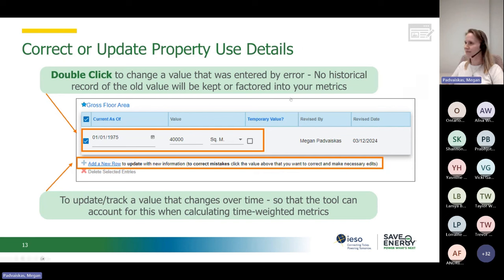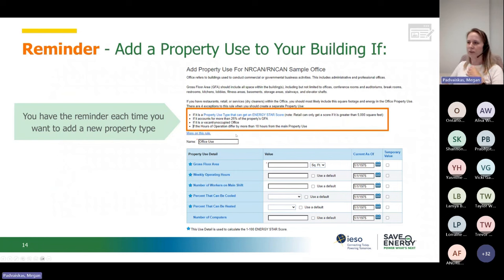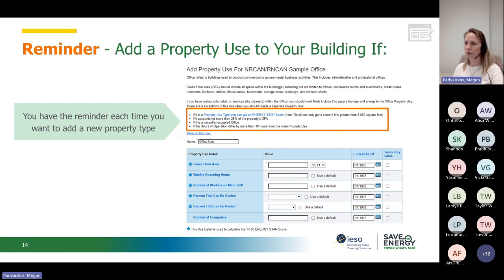Don't hesitate to stop me — I'm here to answer your questions. If you want to add more information, just click on Add a New Row. There's always a reminder at the top when you're changing your information explaining why you would or wouldn't want to do that. For example, if your new vacant property type is not more than 25% of your gross floor area as Energy Star specifies, then maybe don't include it — it's too small a detail to impact your Energy Star score and would be a lot more to manage.